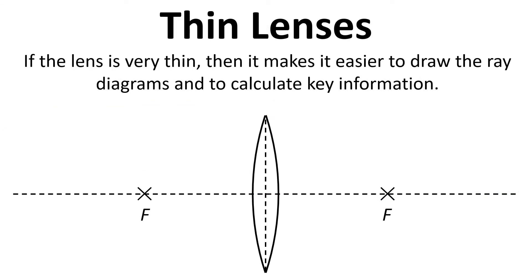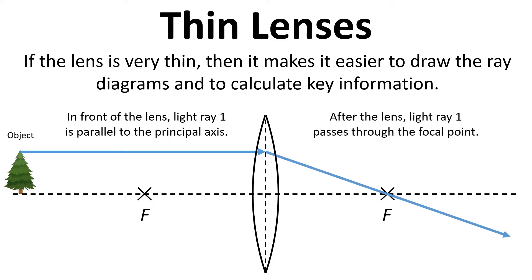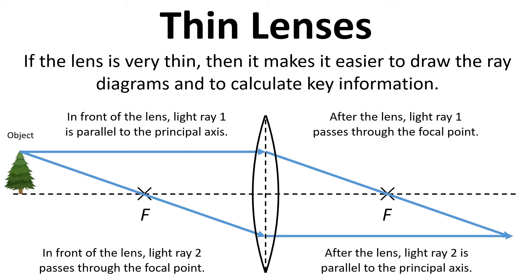To make the diagrams a bit simpler to draw we're going to assume the lens is thin. Again we have the object, we draw a light ray parallel to the principal axis, and when it hits the centre of the lens we simply bend the light ray to go through the focal point. Then we draw another light ray that goes through the focal point in front of the lens, meaning that light ray will come out parallel to the principal axis. Where they converge is where the image will be formed — a nice sharp in-focus image.